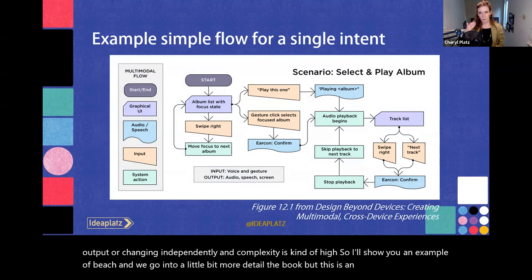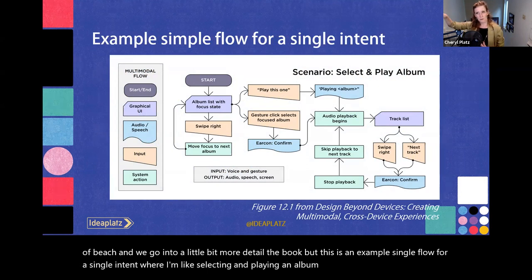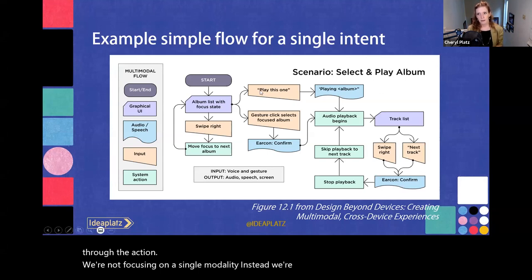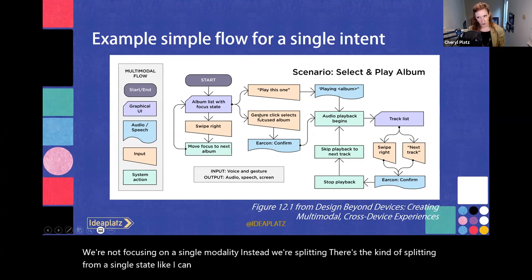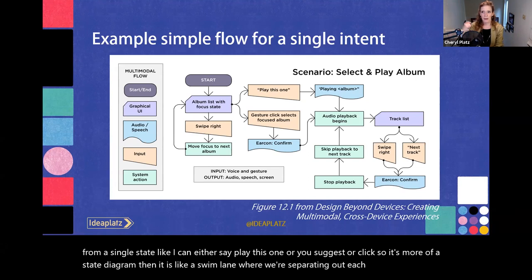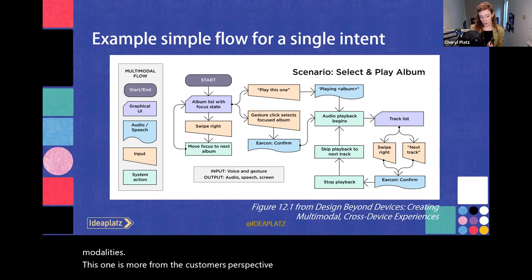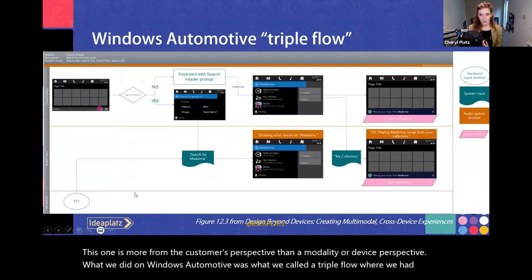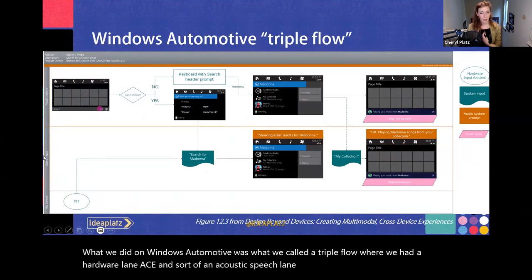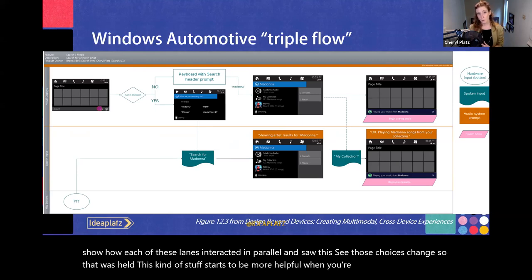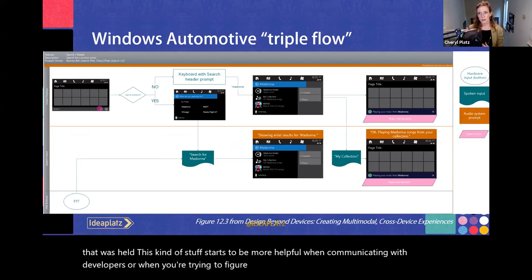This is an example single flow for selecting and playing an album, going sequentially through the action. We're not focusing on a single modality — instead, we're splitting from a single state: I can either say 'play this one' or use a gesture click. It's more of a state diagram than a swim lane — more from the customer's perspective than a modality or device perspective. What we did on Windows Automotive was a triple flow with a hardware lane, an acoustic speech lane, and a visual lane, showing how each lane interacted in parallel — more helpful when communicating with developers or figuring out what UI affordances you need.